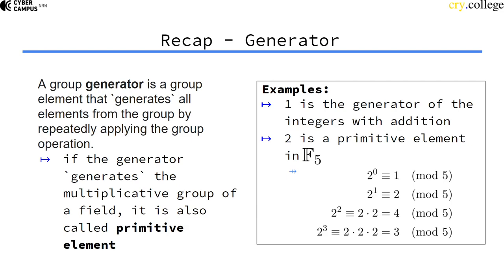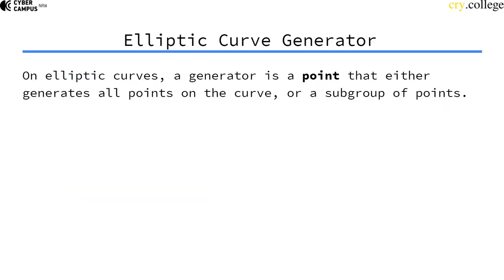If you remember, generators were group elements that generate the entire group just by repeatedly applying the group operation to themselves. So on an elliptic curve, a generator is a point, because points are the group elements, that generates all points on the curve or a subgroup of points on this curve.